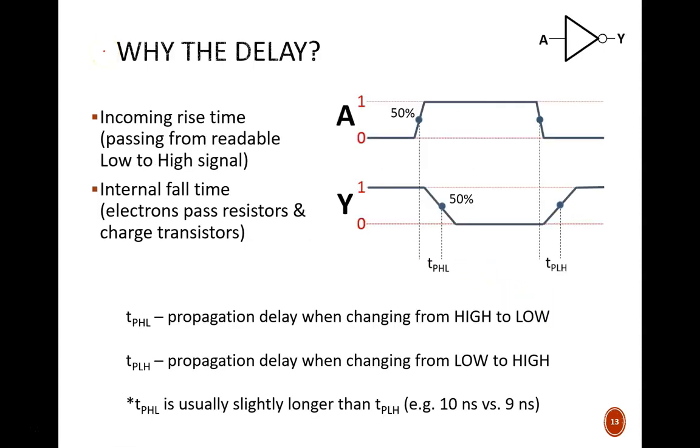What is the cause of the delay through each gate? Let's use a simple NOT gate to explain. Here we see output Y responding to input A. Y is always the complement of A, except during these brief transition times. A small part of the delay comes from the incoming rise time. A switch is flipped that causes input A to jump from low to high. It takes a small amount of time for the power supply electrons to pass through wires and build up enough voltage to act as a high signal.